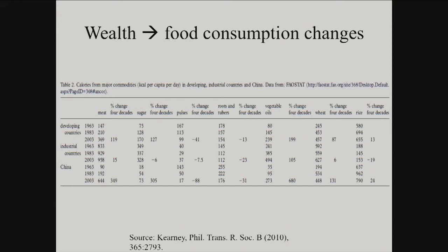Here is a list of various things people consume and changes in that consumption from 1963 to 2003. Developing countries and China increased a lot in meat consumption and sugar consumption, decreased in green vegetable and roots and tuber consumption, and increased in vegetable oil and grain consumption. So you're talking about a shift in diet — less fruits and vegetables, more meat, fats, and sugars. That's going to directly correlate to increases in obesity over time.